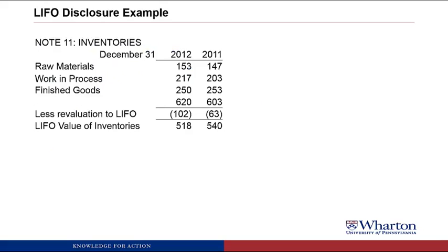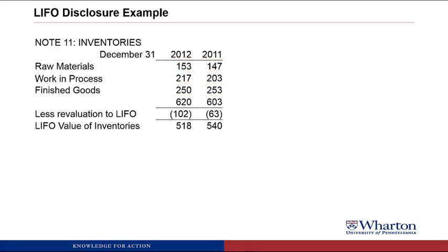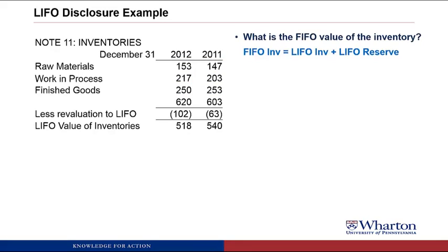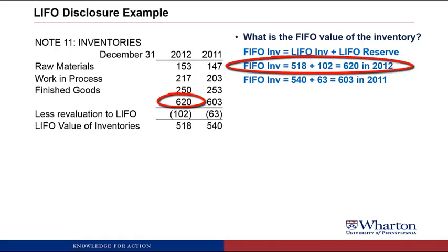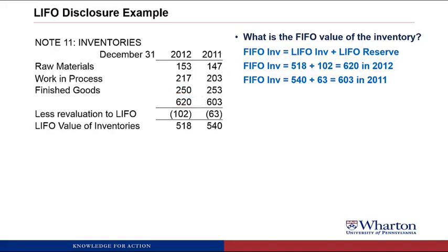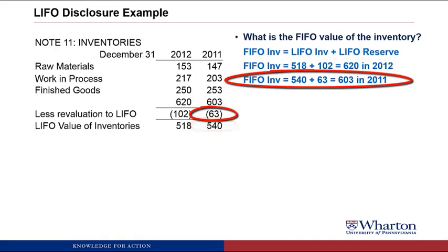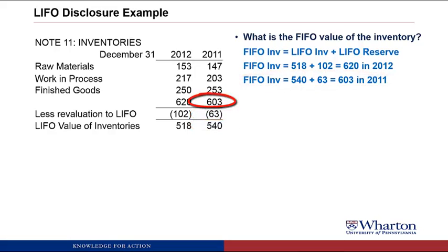Here's the disclosure in the footnotes. You often see the breakdown into raw materials, work in process, and finished goods inventory. What we want to find out is what would be the FIFO value of the inventory. The FIFO value equals the LIFO value plus the LIFO reserve. At the bottom of the disclosure, the LIFO inventory value is 518 in 2012 — that's what shows up on the balance sheet — and the LIFO reserve is 102. So 518 plus 102 gives us 620 as the FIFO value of inventory in 2012. Similarly in 2011, 540 plus the LIFO reserve of 63 gives us 603 as the FIFO value.